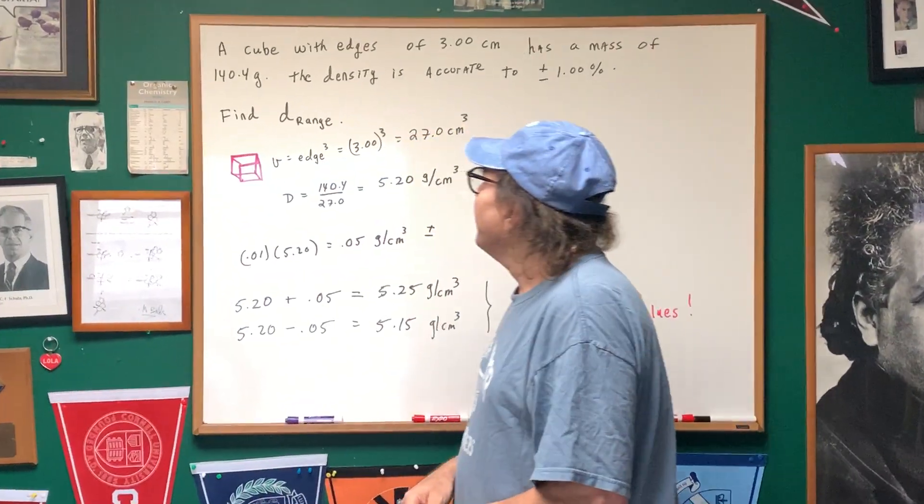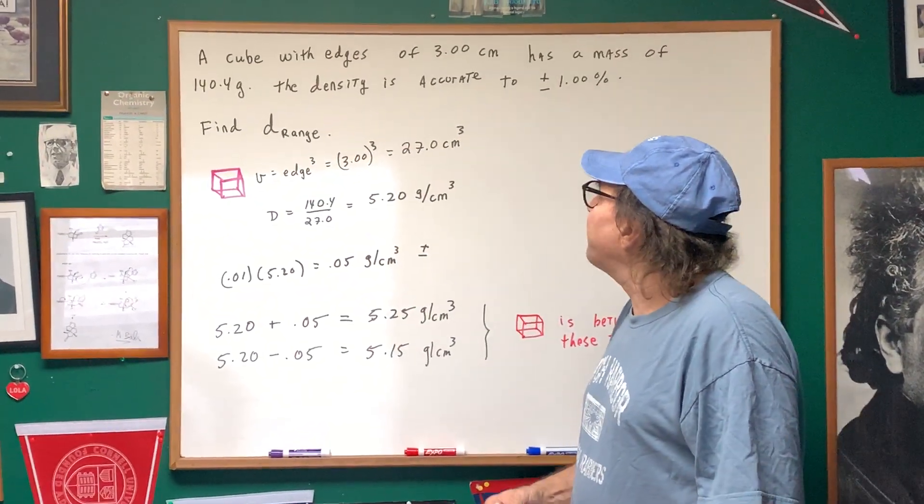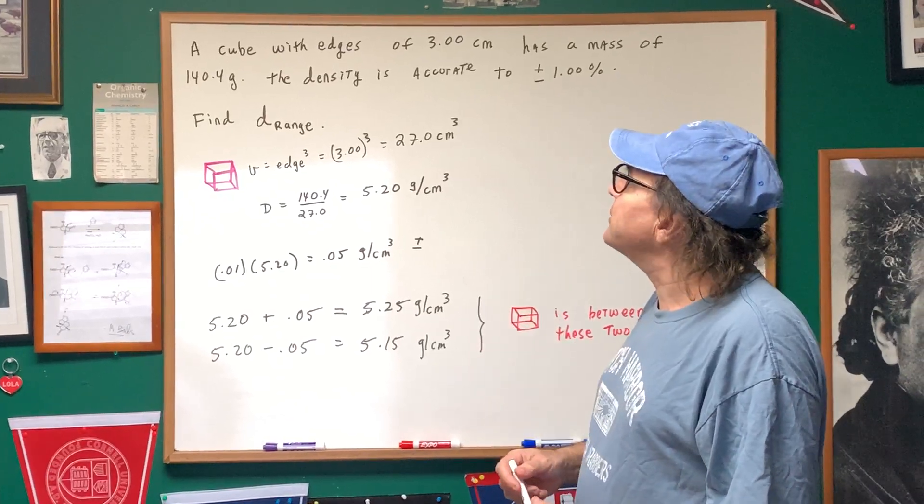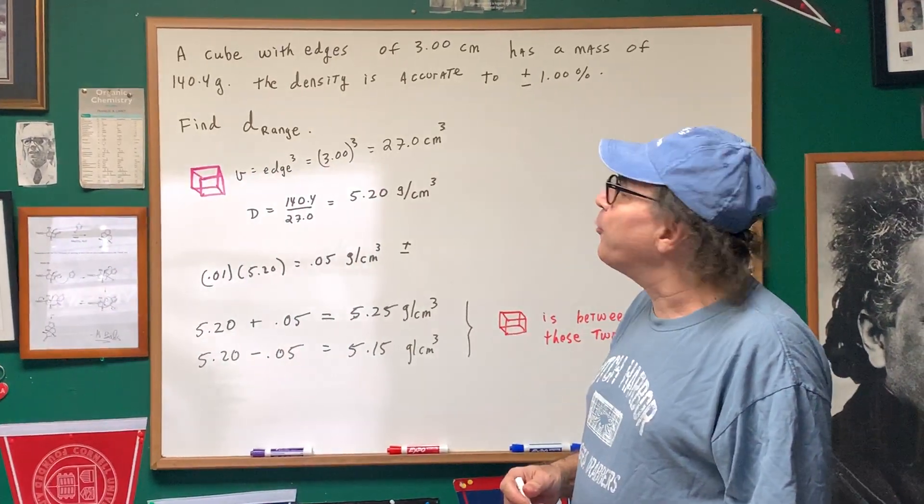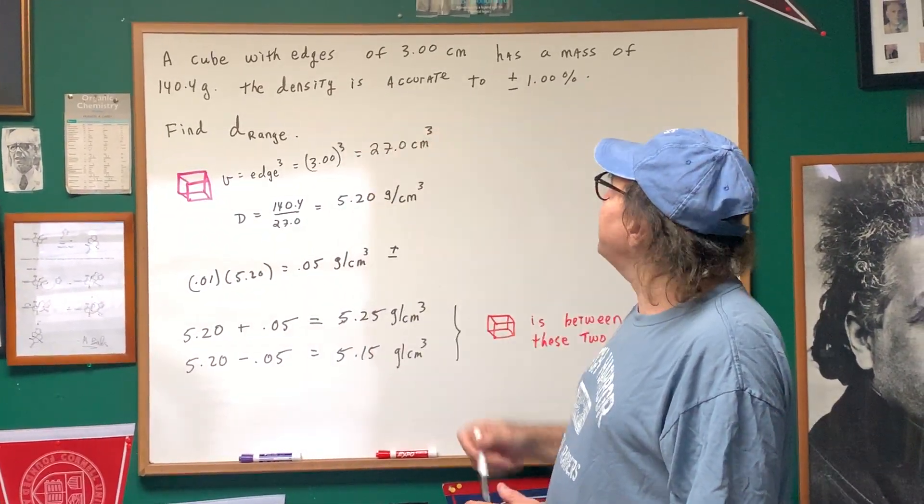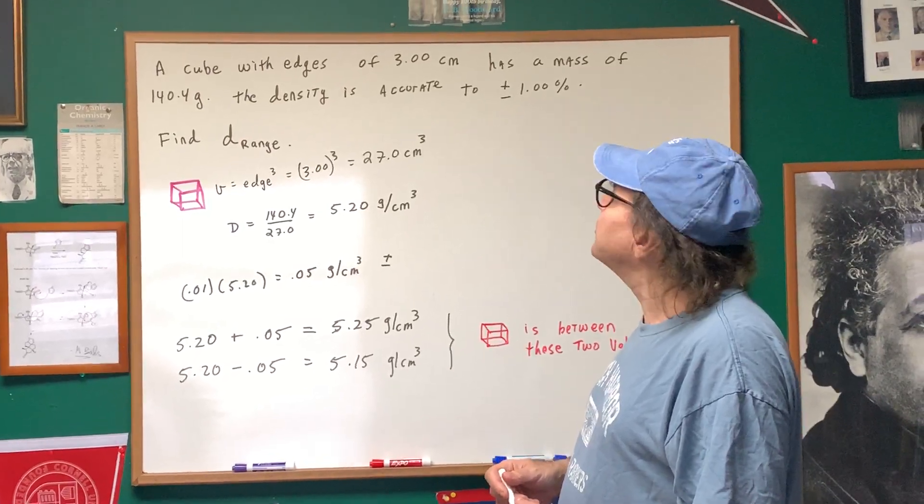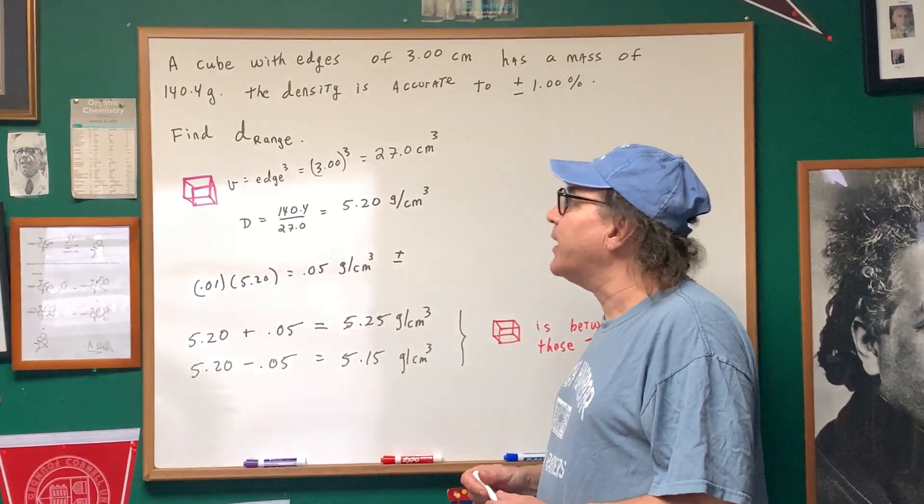Come on, have a look. A cube with edges of 3 centimeters has a mass of 140.4 grams. The density is accurate to plus or minus 1%, and I ask you to find the density range.